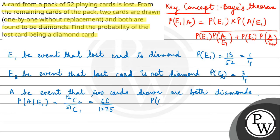Now probability of A given E2 situation, if the lost card is not a diamond, then we have 13 diamonds, from which we take 2. And total here will be 51 C2. So in this case probability is 78 by 1275.